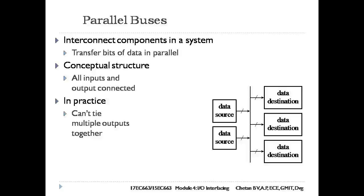Parallel buses carry encoded data from multiple sources to several alternate destinations. Such connection structures are called buses, as shown in the figure. The figure shows the general idea of bus connection structures. It is not realizable directly as shown, since the bus signals are shared between the data sources, and only one of them should provide data at once.